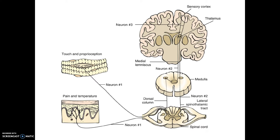Here we can see we have different sensations that can be experienced. Touch and proprioceptive sensation can come from the musculature, and then we have pain and temperature sensation which can come through the skin. Each of those nerves are going to be afferent nerves that will travel through the posterior horn of the spinal column and go into the spinal cord, and that information is going to travel up to the brain via different order neurons.